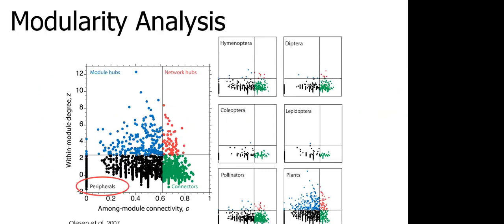Let's define those roles. First we have our peripheral species - these are specialists that have very few links in the network and almost exclusively interact with species within their own module. Then we have our module hubs - these are highly connected species that are linked to many other species within their own module. Next we have our connectors - connector species are responsible for linking the modules of the network together. Lastly you have your network hubs - these are super generalists and they tend to function as both connectors and module hubs.